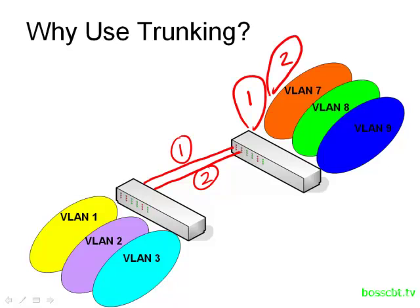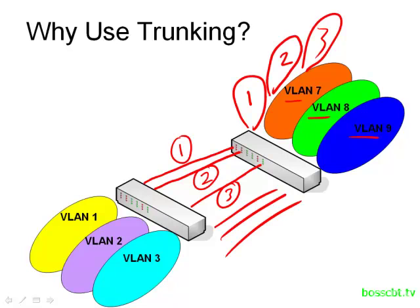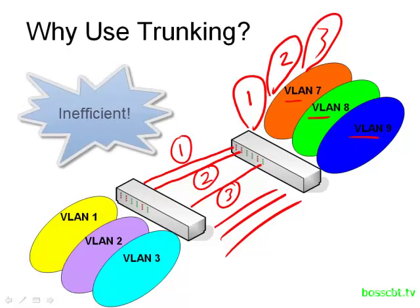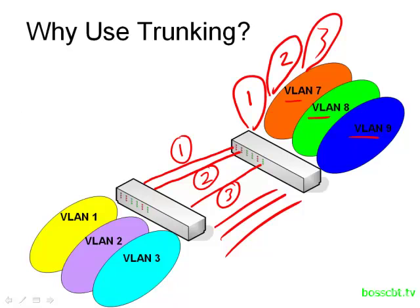I'll have to repeat this for every single VLAN that I want to connect between these two switches. So if I add VLAN three, I have to run another access port and configure it in VLAN three. We've only connected VLANs one, two, and three between the two switches — we haven't even begun to touch seven, eight, and nine. For those, we'll have to run three more connections. This is really wasteful — we're using a total of six ports on each switch just to connect the switches together so that all the VLANs can communicate across both switches.